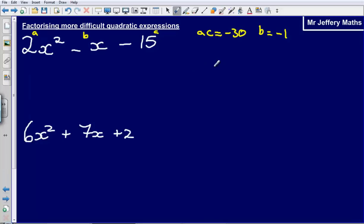From here I then need to figure out, like I did in the previous video, which two numbers will multiply to make minus 30. So my ac part is the bit where I'm trying to figure out two numbers where the product is minus 30 and then two numbers, the same two numbers that will sum to make minus 1.